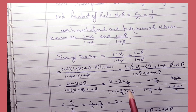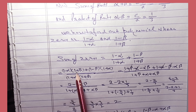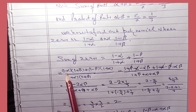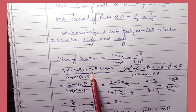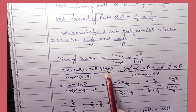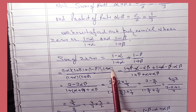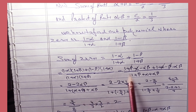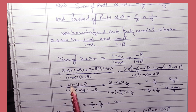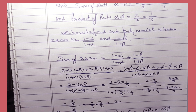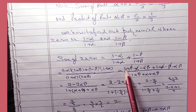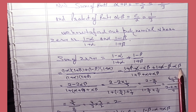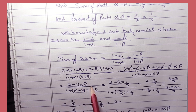Opening the brackets: (1 - α)(1 + β) gives 1 + β - α - αβ. And (1 - β)(1 + α) gives 1 + α - β - αβ. The denominator is (1 + α)(1 + β) = 1 + α + β + αβ. In the numerator, +β and -β cancel, and +α and -α cancel, leaving 2 - 2αβ.